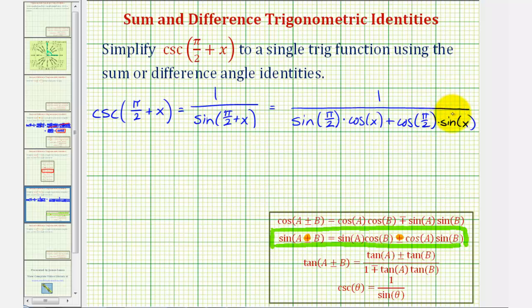So if cosine pi divided by two is zero, this product here would be zero. And if sine pi divided by two is one, this would simplify to one times cosine x or cosine x, and one divided by cosine x is equal to secant x.